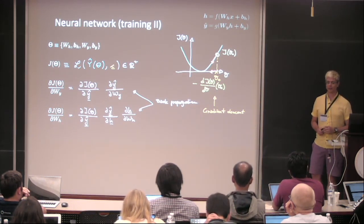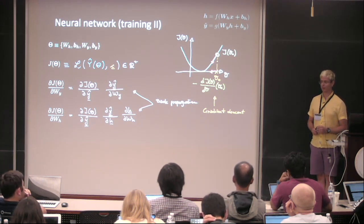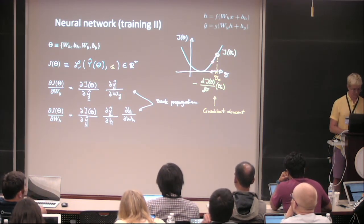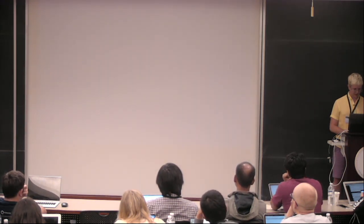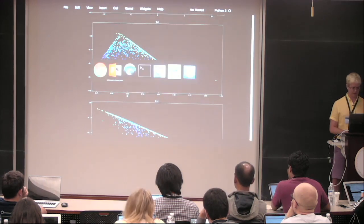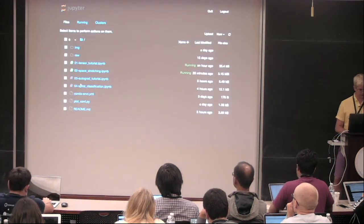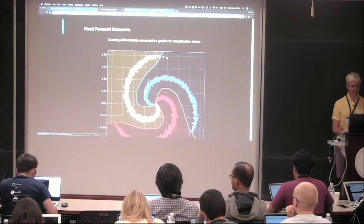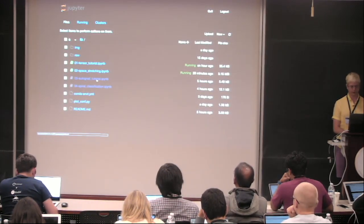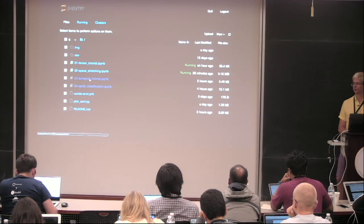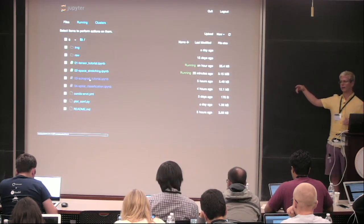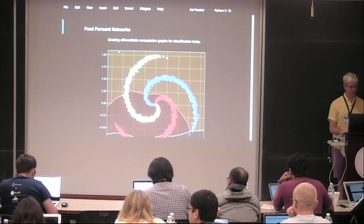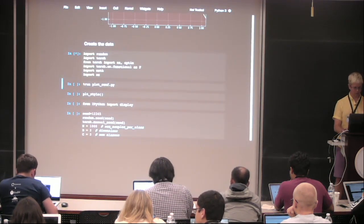That was my last slide of theory — I'm going to show you that this stuff actually works. Back to the notebook. I'm just going to run the spiral classification. I skipped the automatic differentiation tutorial, which showed how computational graphs are generated and the chain rule is computed — you can go through that on your own.